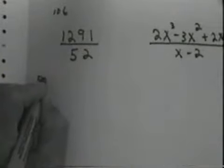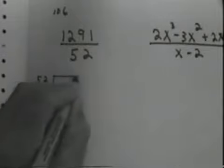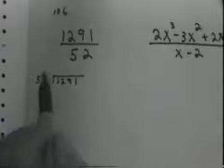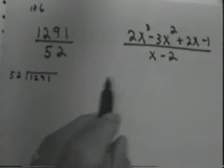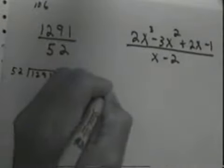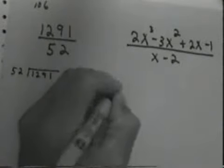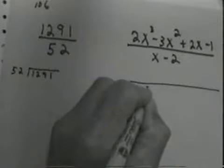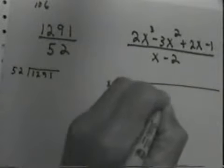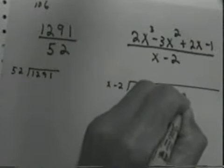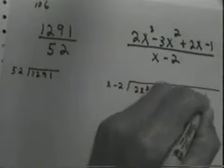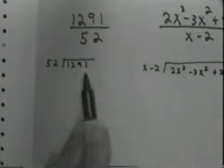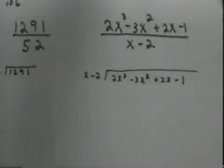We're dividing 52 into 1291. I'll write the long division for polynomials the same way. We're dividing x minus 2 into 2x cubed minus 3x squared plus 2x minus 1. It's hard to see them all on the screen, but you write it the same way.